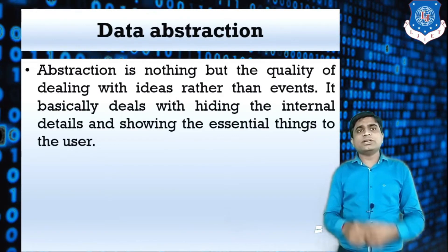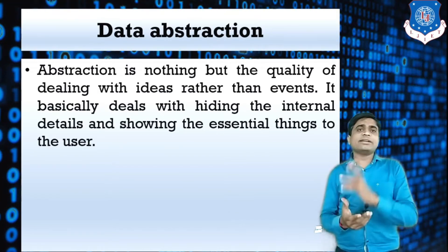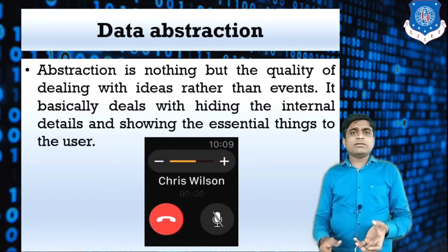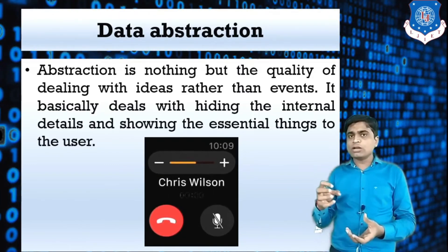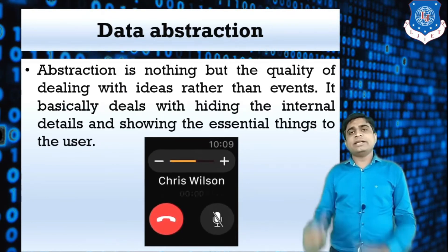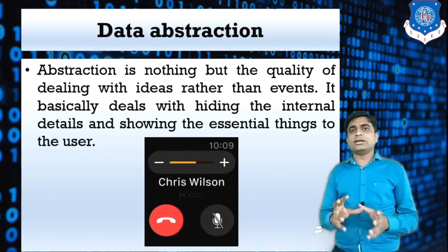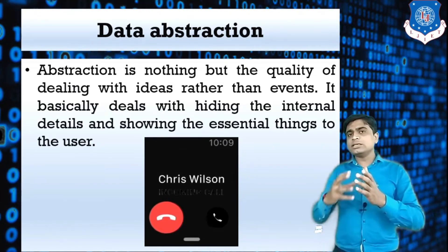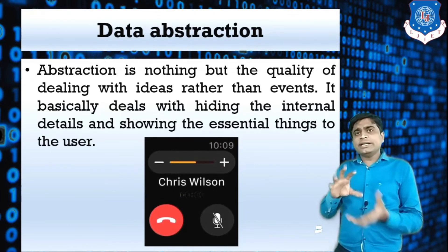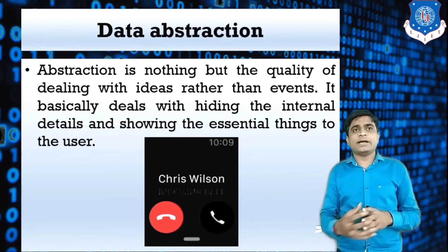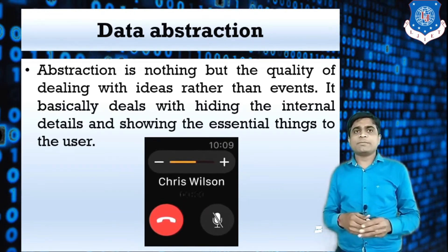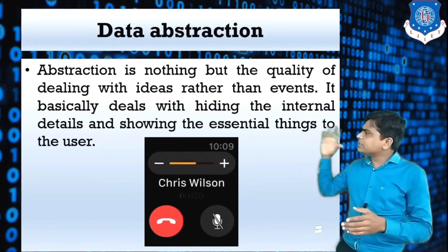The next concept is data abstraction. Data abstraction is nothing but the quality of dealing with ideas rather than events. As you can see in the figure, whenever we get a call, we have two options: either pick up the call or reject the call. But in the background there are lots of code. These two buttons only show pick up and reject, while many lines run behind the background. Data abstraction gives only an overview rather than the detail, hiding the internal details and showing only the essential things to the user.